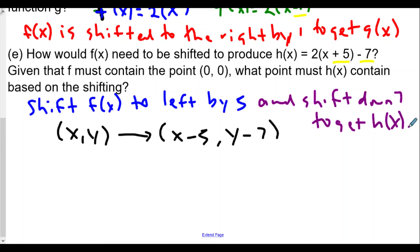They tell us (0, 0) was on the original function, so we apply this rule: 0 - 5 and 0 - 7, we get the coordinate (-5, -7). This point must be on h(x) because it is the coordinate (0, 0) shifted to the left by five and down by seven. Any point on the graph of f translated under the same rule will now be that new point on h(x). That's how we do this based on our translations.